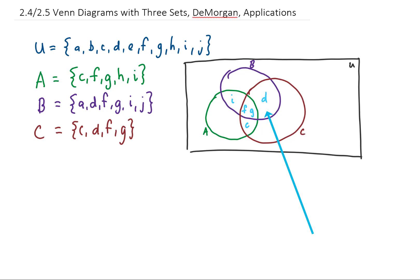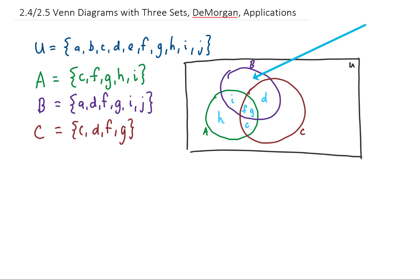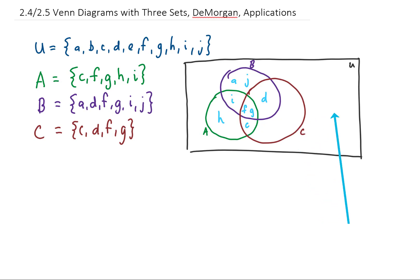Continuing to work our way out, this region out here is all the elements that are in A but not in B or C. It looks like there's an H in set A, and there is no H in set B or C. Up here are all the elements in set B and no other sets — that's going to be A and J. Down here would be elements in set C not in any other set, but there aren't any, so we'll leave this section blank. Out in the universal set are elements not in A, B, or C — that's B and E.